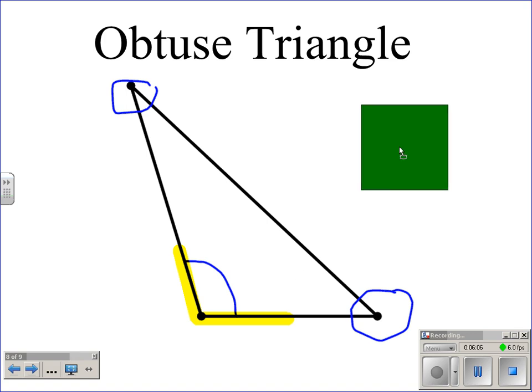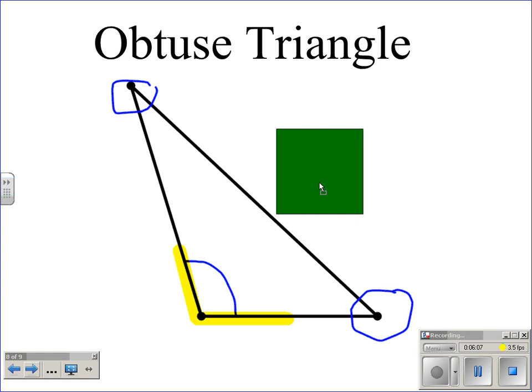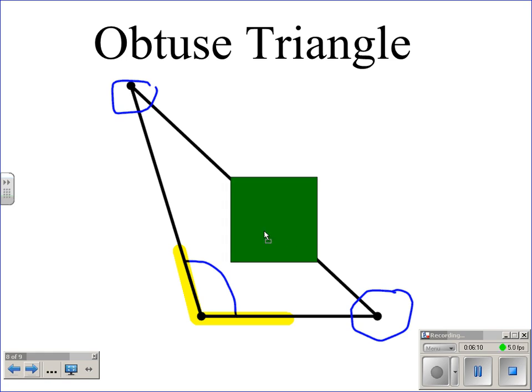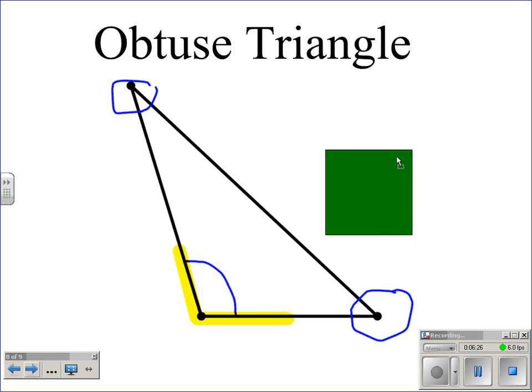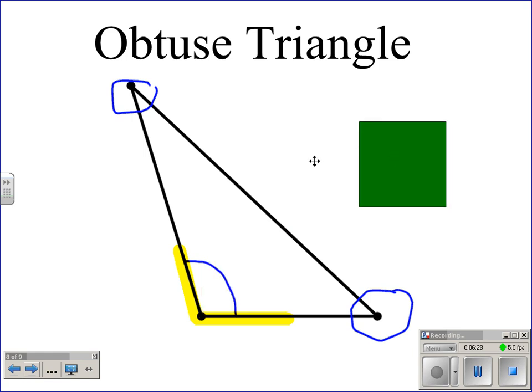You can test it by taking something that you know has a 90-degree angle, like this square or the edge of your paper, and laying it down on the line. If this were a 90-degree angle, it would match up perfectly. If it were an acute angle, it would be covered behind the square. But since it extends out, we know that that forms an obtuse angle and therefore makes this an obtuse triangle.